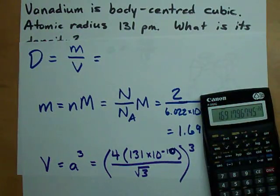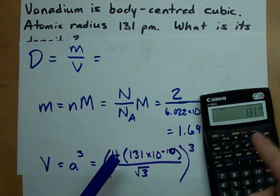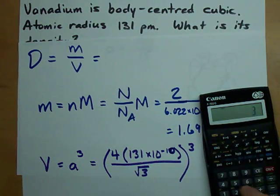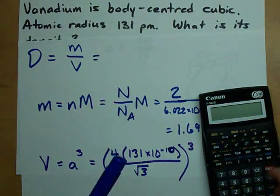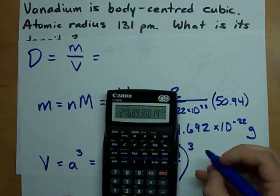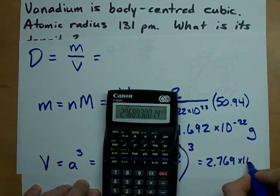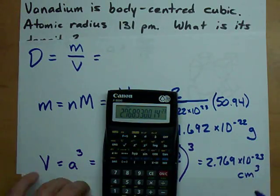So anyways, 4 times 131 times 10 to the power of negative 10 divided by the square root of 3 all to the power of 3 ends up giving us 2.769 times 10 to the power of negative 23 centimeters cubed.